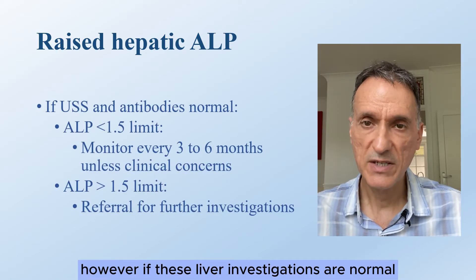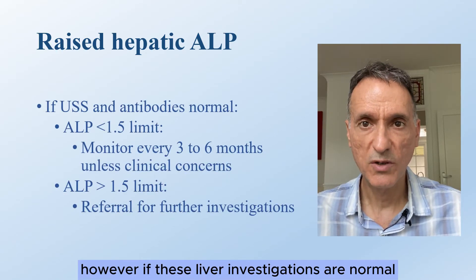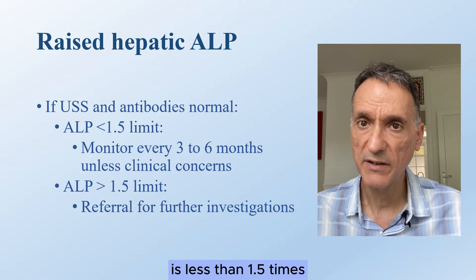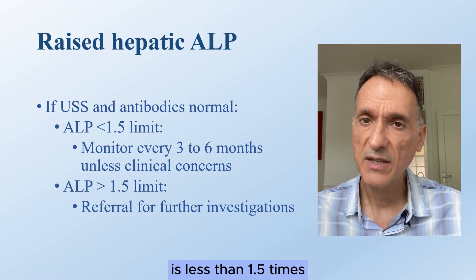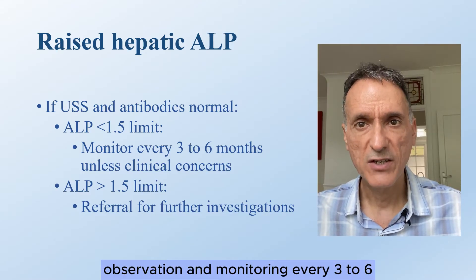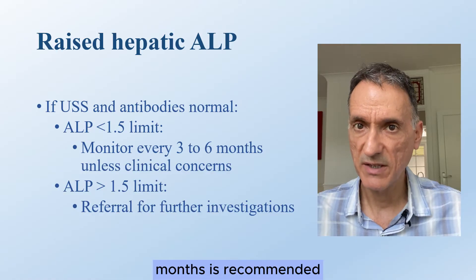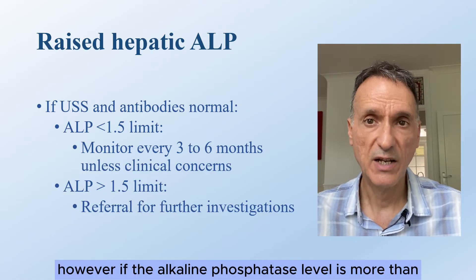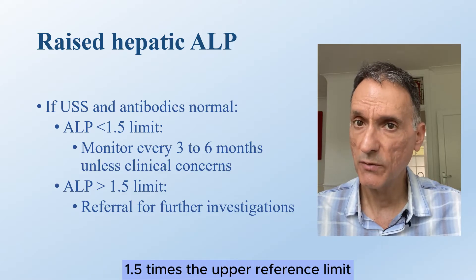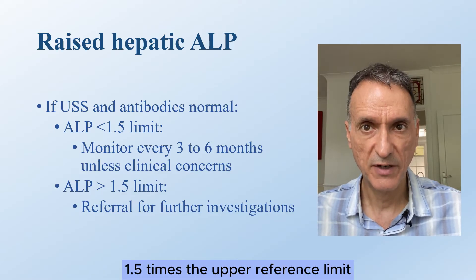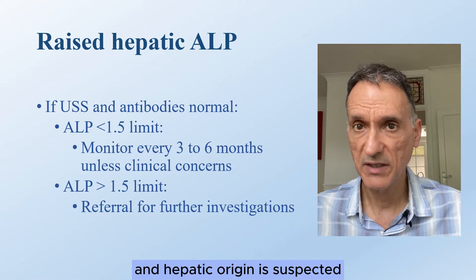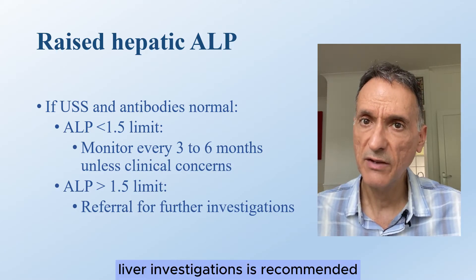If these liver investigations are normal and the alkaline phosphatase level is less than 1.5 times the upper limit of normal, observation and monitoring every three to six months is recommended. However, if the alkaline phosphatase level is more than 1.5 times the upper reference limit and hepatic origin is suspected, referral for further liver investigations is recommended.